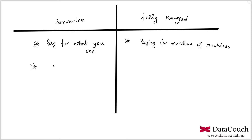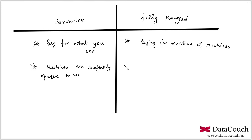When we say a service is serverless, the machines are completely opaque to us — we don't even know how many servers are being created behind the scenes. For example, BigQuery charges you based on the amount of data you process, and you have no visibility into how many servers were created behind the scenes.